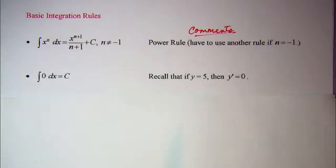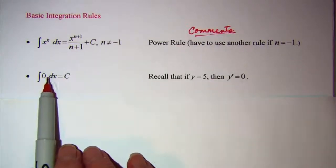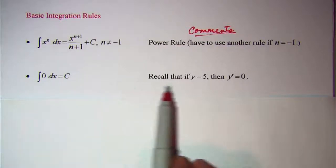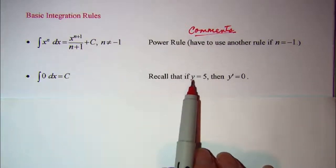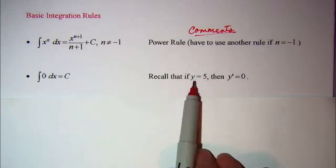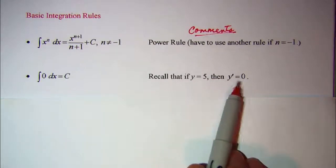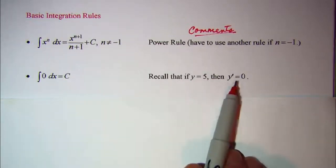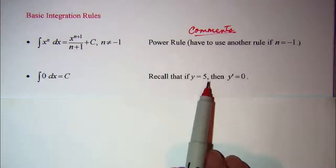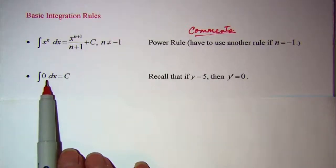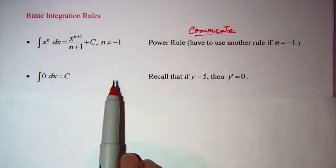Our next rule: when we integrate 0, we get a constant. We can see this because if we start with a function y equals 5 and differentiate, we get y prime equals 0. So when we integrate 0 we get a constant — we're just doing the inverse of that.